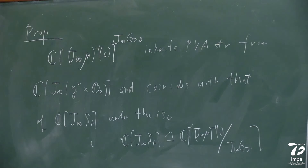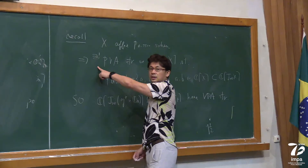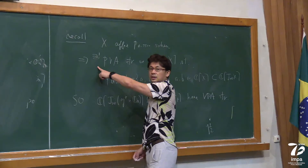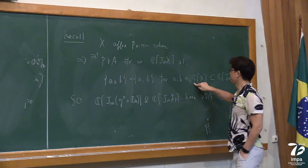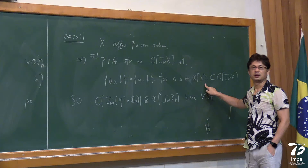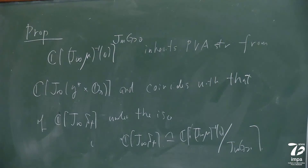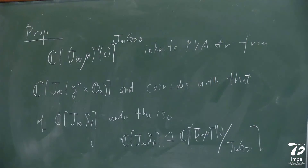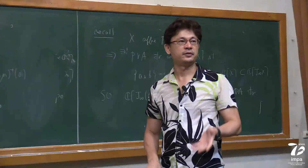The proposition is that the invariant polynomial ring inherits a Poisson-vertex algebra structure from functions on the arc space of G-star cross O_chi by this isomorphism, and coincides with the Poisson structure on the arc space of the Slodowy slice. This is easy to check because of the uniqueness statement: if the Poisson structures agree on classical functions, they agree everywhere. So, as soon as we have a nice Hamiltonian reduction in the Poisson setting, we can immediately lift it to the Poisson-vertex algebra setting.